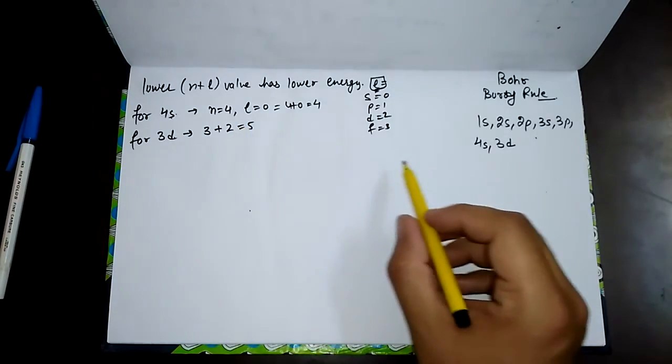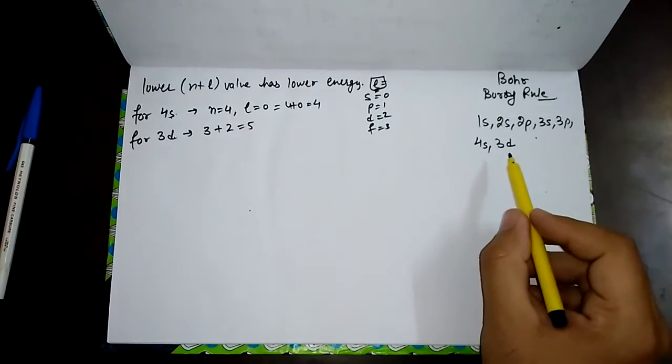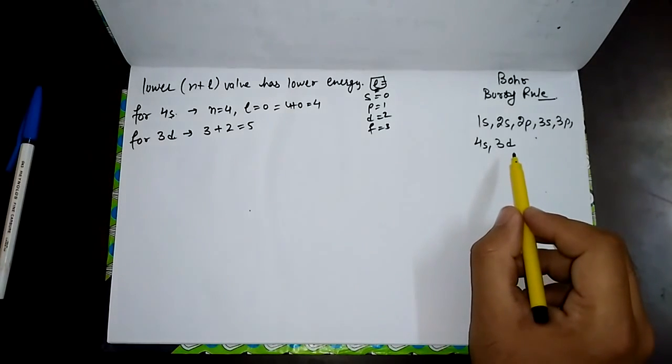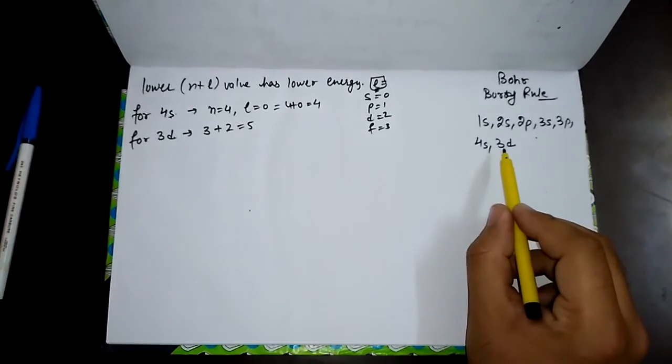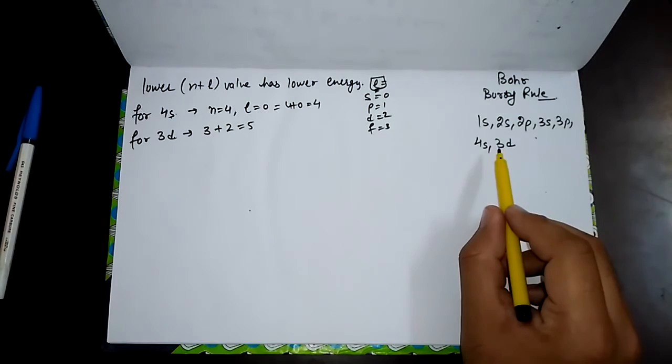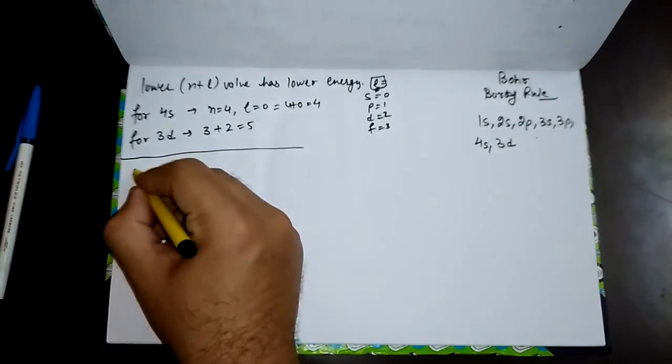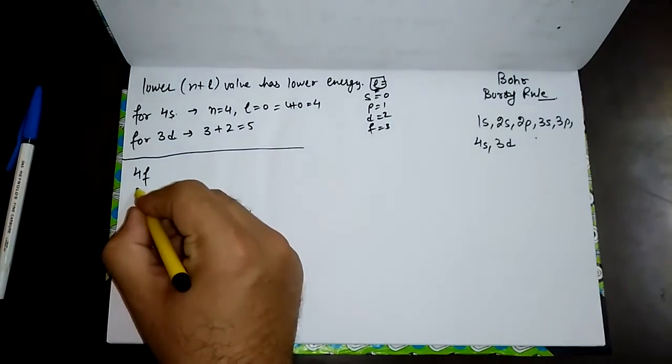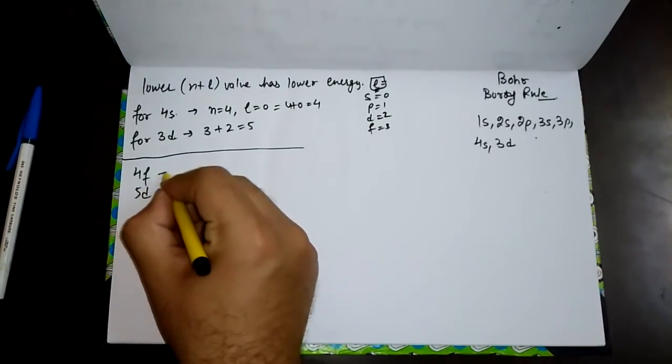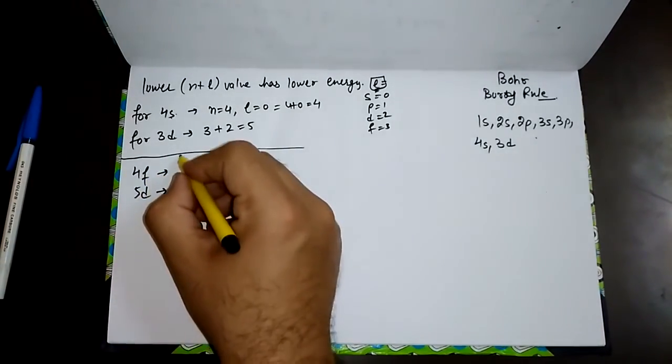If two orbitals have the same n plus l value, giving an example: if we are having 4f orbital and 5d orbital.